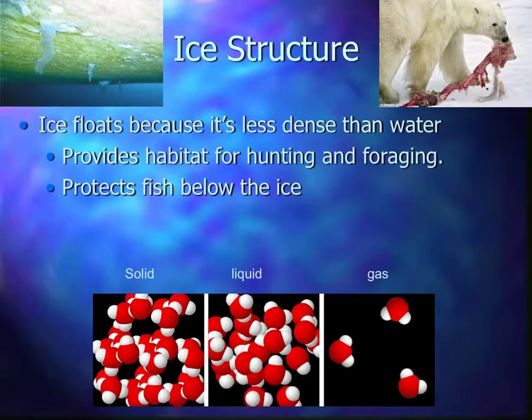So, again, that ice structure. We talk about ice floats. We probably take that for granted. But if you've ever seen, like, dry ice, which is frozen carbon dioxide, it sinks. It's actually pretty unique for the solid form of something to float. And you see down here, the molecules are much less dense. So, it's less dense than water, liquid water. And so, that allows it to float. And who cares? Why does that matter? Well, one, it provides a habitat for hunting and foraging.